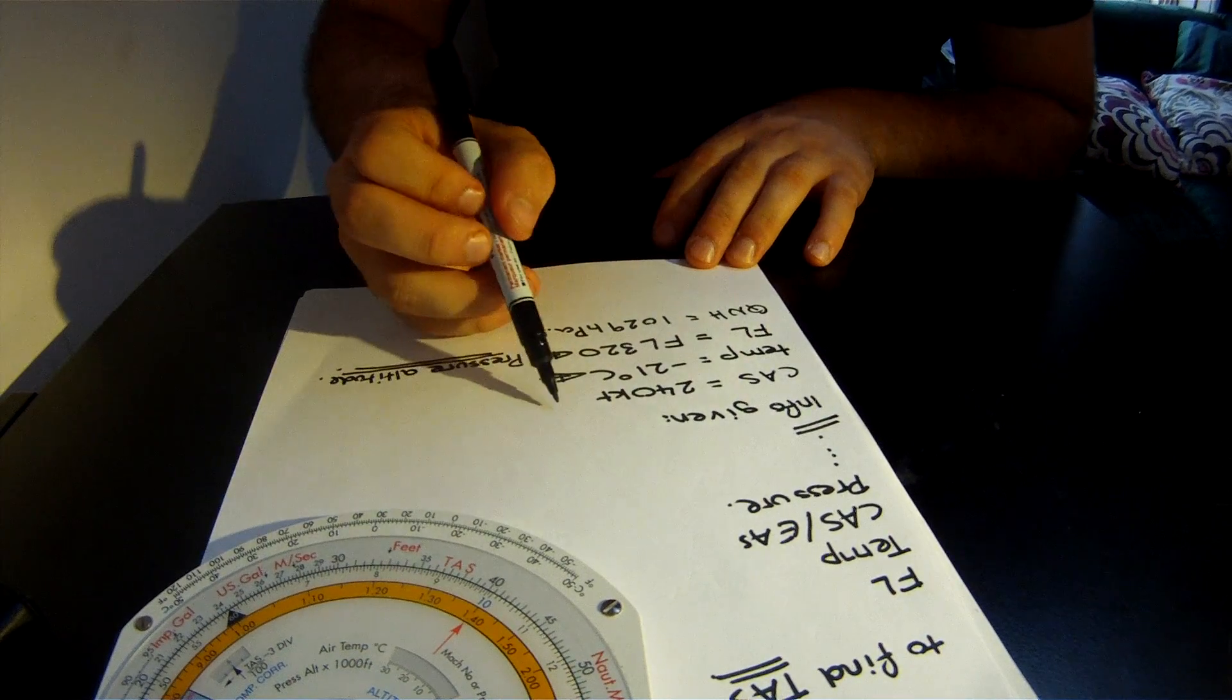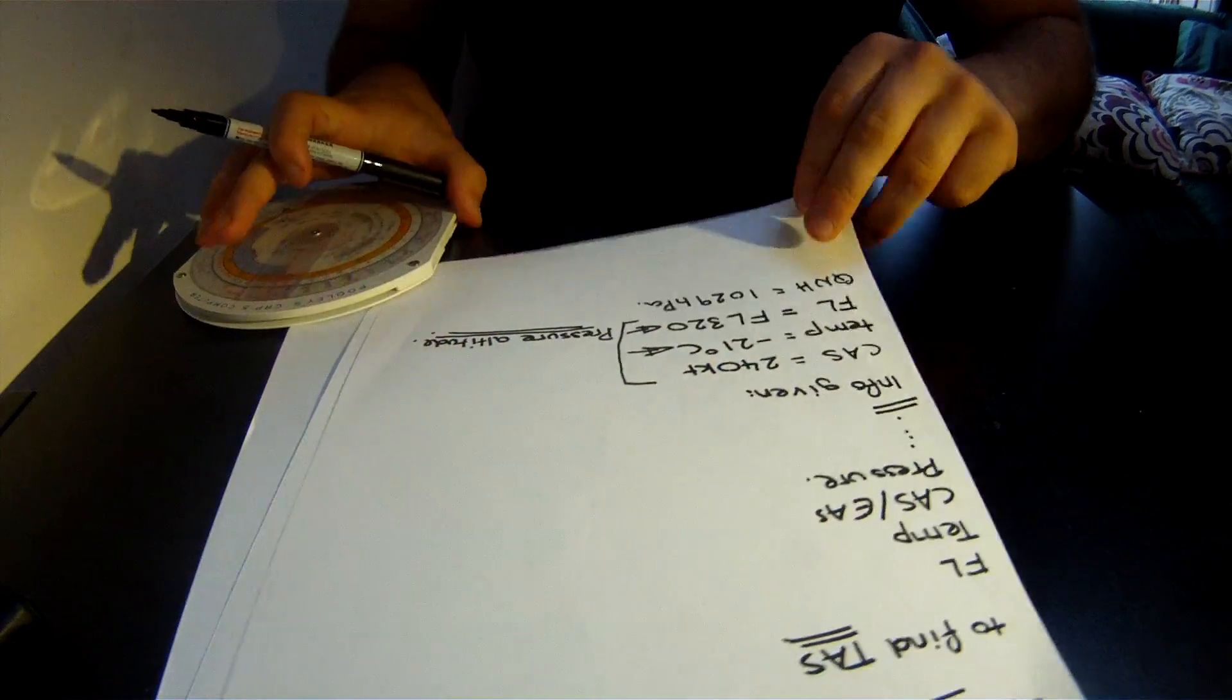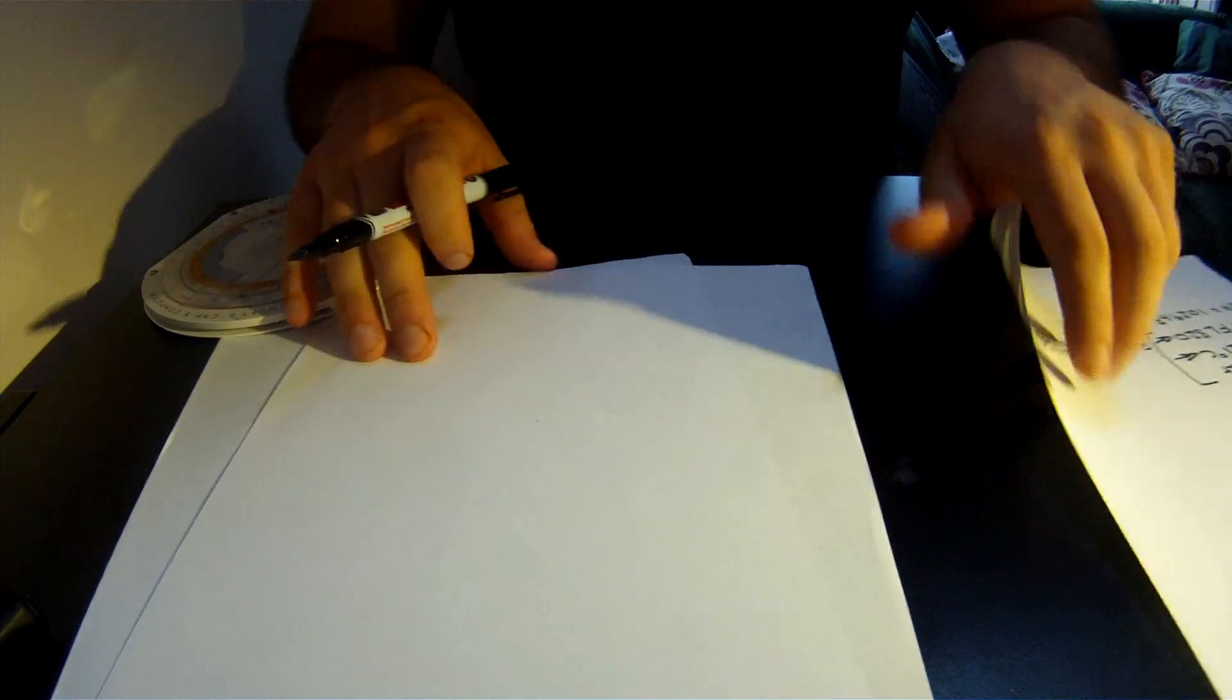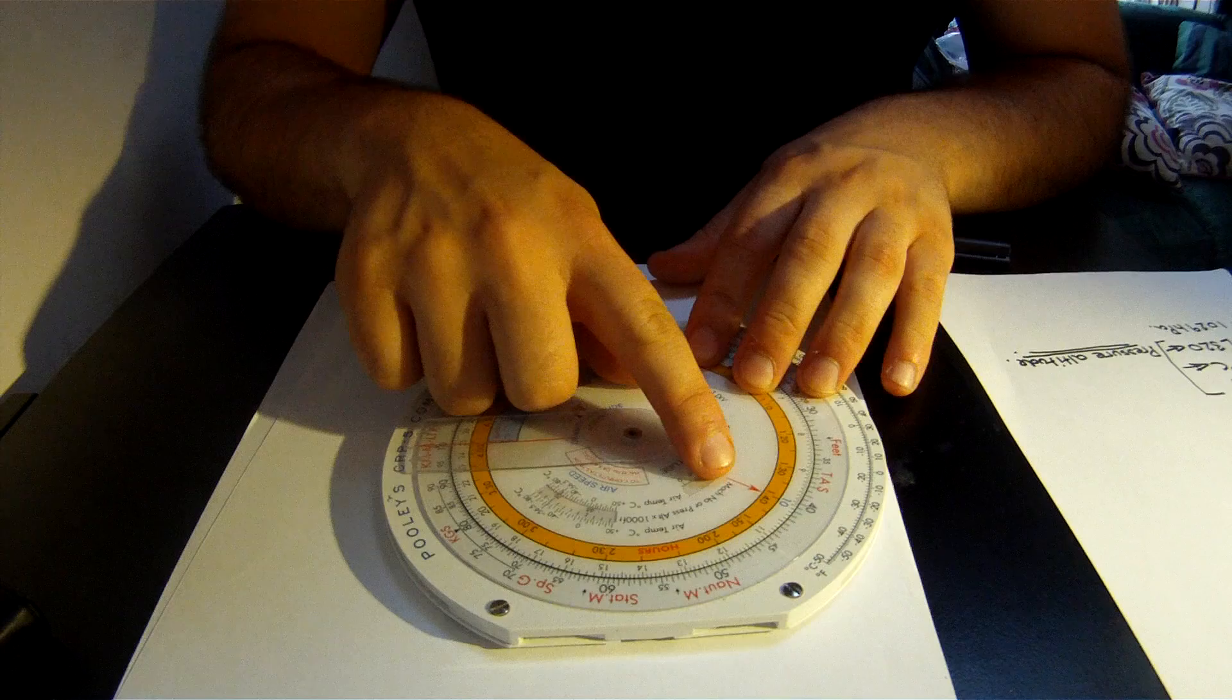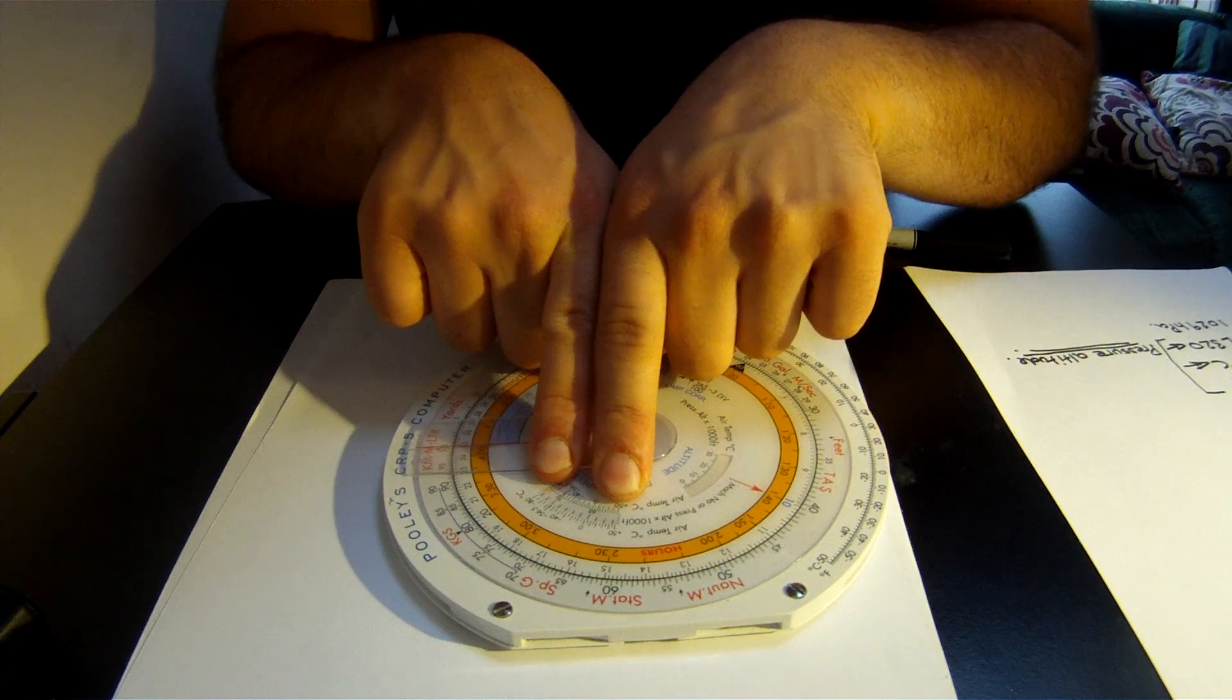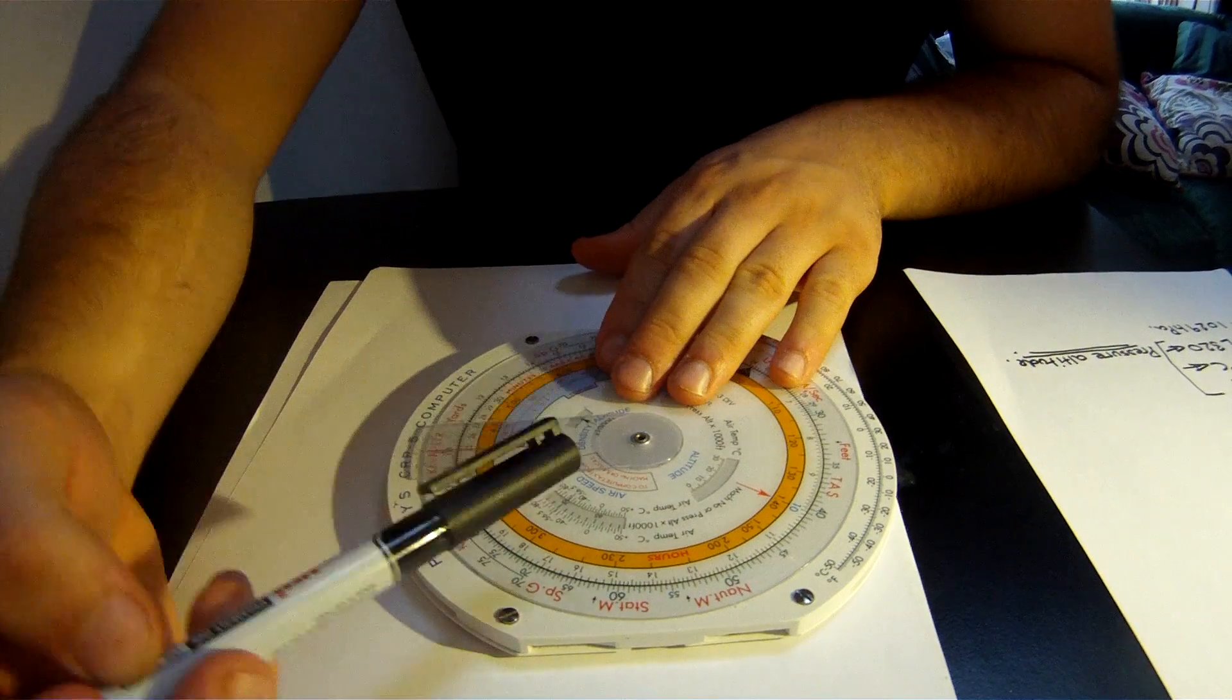What we're going to need are these three bits of information. Let's go over the first step. The first step is to locate the Mach or pressure altitude window, which is this window right here.